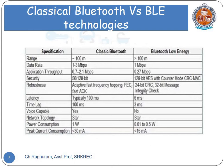The differences between classical Bluetooth and Bluetooth Low Energy: Range — classical Bluetooth up to 100 meters; BLE less than 100 meters. Data rate — classical Bluetooth 1 to 3 Mbps; BLE 1 Mbps. Application throughput — classical Bluetooth 0.7 to 2.1 Mbps; BLE 0.27 Mbps. Security — classical Bluetooth 56 to 128 bits; BLE 128-bit AES with counter mode CBC-MAC. Robustness — classical Bluetooth uses adaptive fast frequency hopping, FEC, and fast acknowledgement; BLE uses 24-bit CRC and 32-bit message integrity check. Latency — classical Bluetooth typically 100 milliseconds; BLE 6 milliseconds. Time to connect — classical Bluetooth 100 milliseconds; BLE 3 milliseconds.